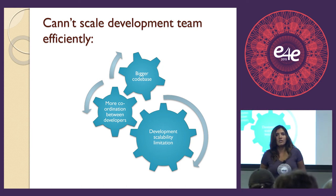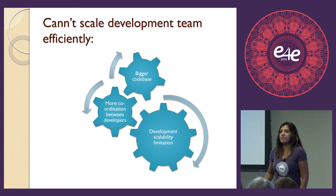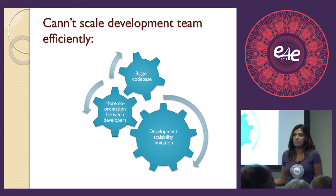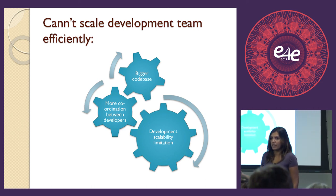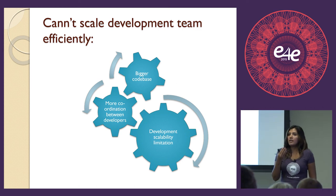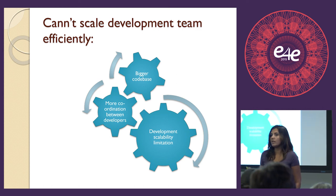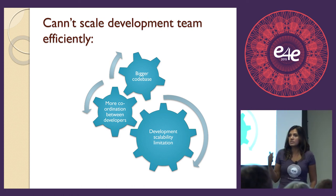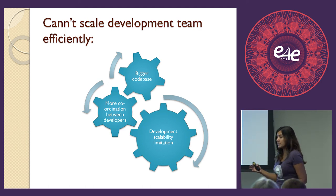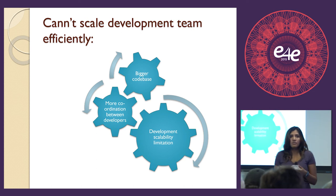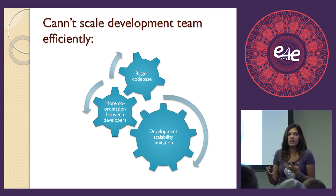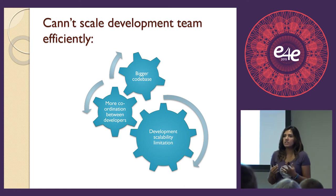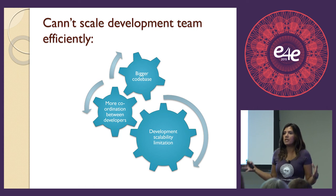If you talk to product owners or business stakeholders, they always complain we are not going fast enough, not delivering features fast enough, because there are definitely competitors out there developing the same thing. You want to be the first to market — there is a huge advantage in that. So companies have money and want to hire more developers to go faster. But if you are on monolithic architecture, you can't do that very effectively. When you add more developers, they need time to ramp up. And if you have 120 developers instead of 60, it's a bigger mess — more coordination. You double your headcount but your productivity doesn't double.